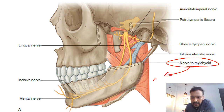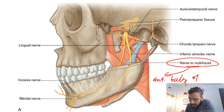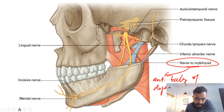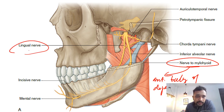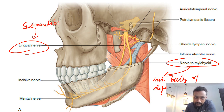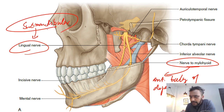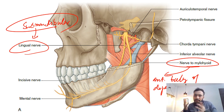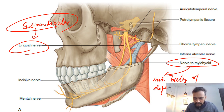The nerve to mylohyoid further gives branches to the anterior belly of the digastric muscle. On the lingual nerve lies the submandibular ganglion, which is joined by the chorda tympani nerve. The chorda tympani gives parasympathetic supply to the submandibular and sublingual glands.